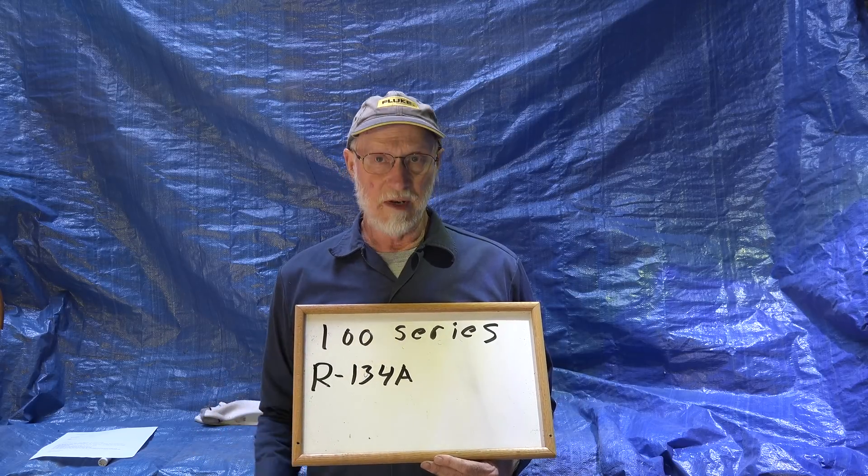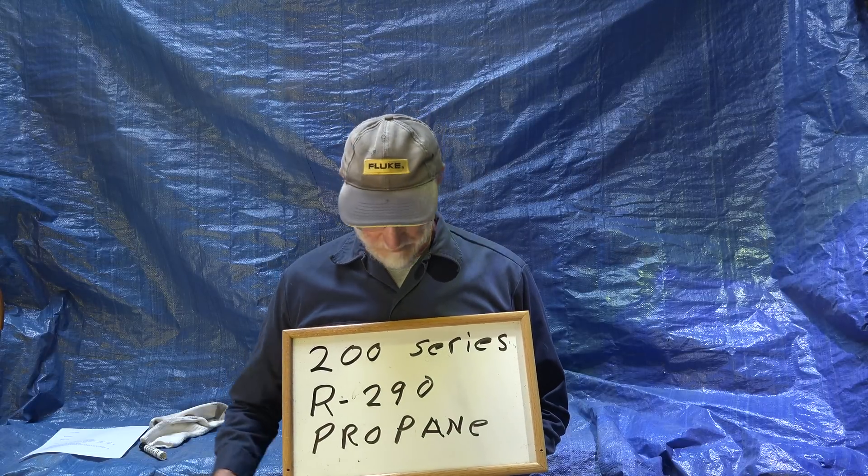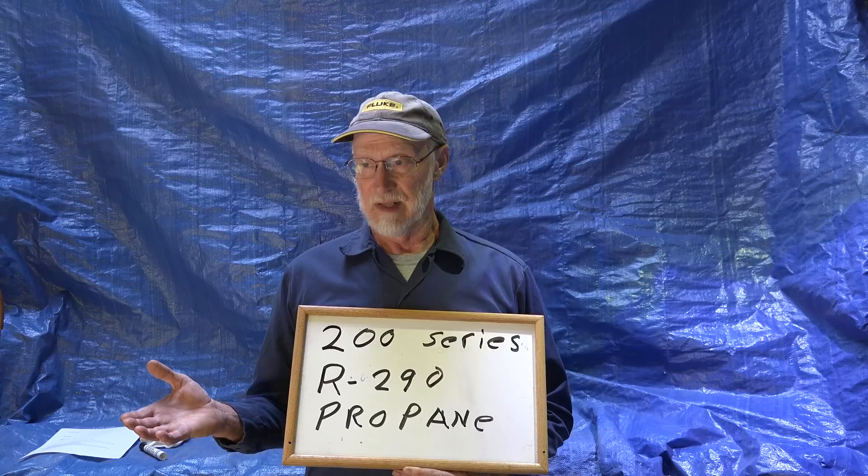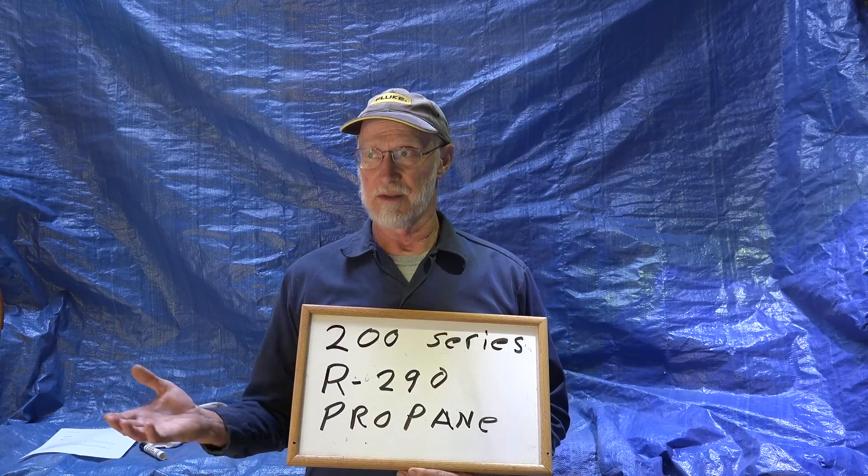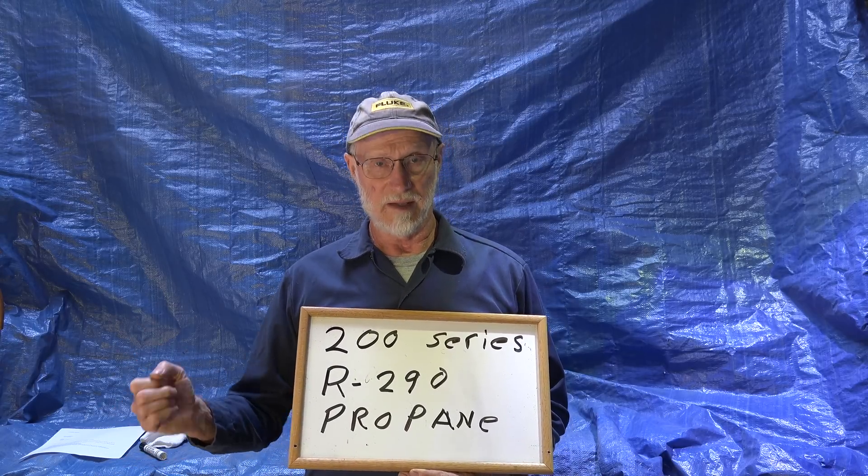The 200 series of refrigerants — the only one we really use much of is R290, which is propane. R290 is actually a hydrocarbon. A lot of the other hydrocarbons are in the 600 numbers, though I'm not sure exactly why that is.